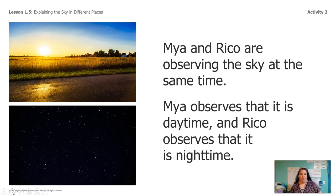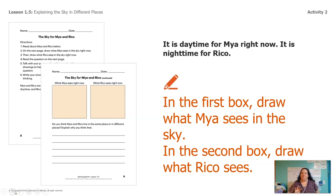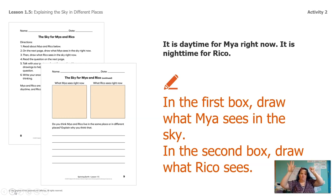We're going to talk about two other people: Maya and Rico are observing the sky at the same time. Maya observes that it's daytime — that's the top picture. Rico observes that it's nighttime — that's the bottom picture. If you have the packet you can write your answers there; if not, write on a blank piece of paper. In one box, draw what Maya sees in the sky, and in the other box draw what Rico sees. So draw Maya seeing the Sun and Rico seeing the stars.